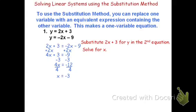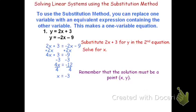Now, the original problem had x's and y's, which means I need a solution that is a point — both x and y values. All I know is that the lines will intersect when x equals negative 3. I don't know what value of y we would have when both equations are equal. To find y, I need to substitute x equals negative 3 into either equation. Pick whichever equation looks easier — they'll both give you the same value of y.